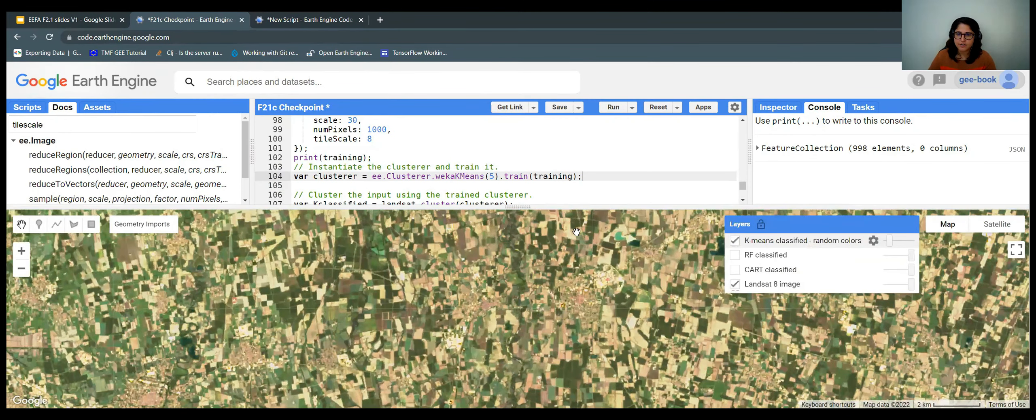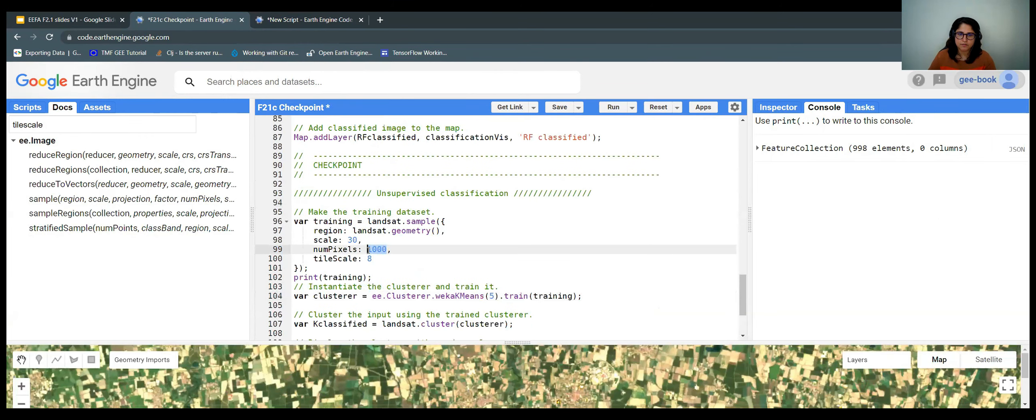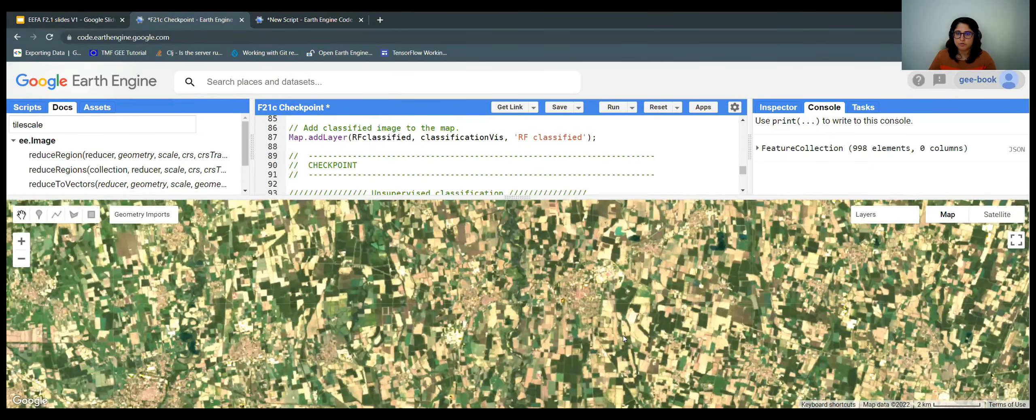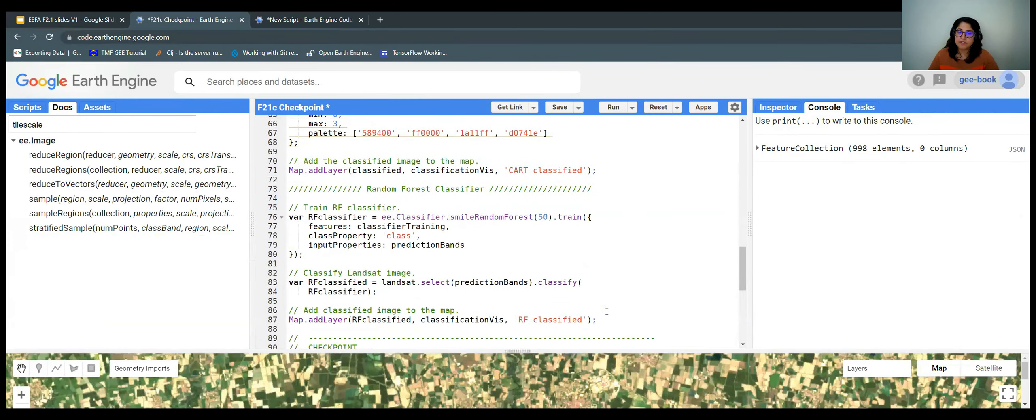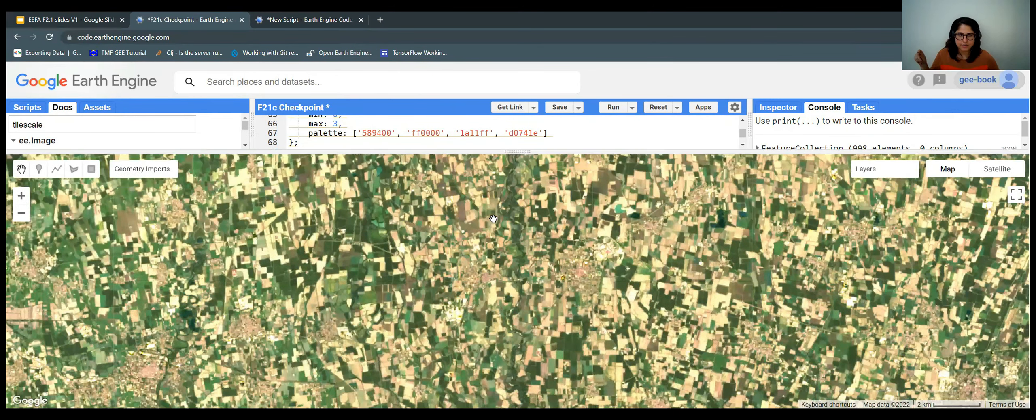So this might be too much for the unsupervised classification. But you can extract many more pixels this way than manually drawing points for the supervised classification. But I also wanted to mention that for the supervised classification, we worked with points. We collected points, but we can also collect polygons. Actually, when you draw a polygon, you extract much more information because you can extract more pixels at once than just doing individual points.